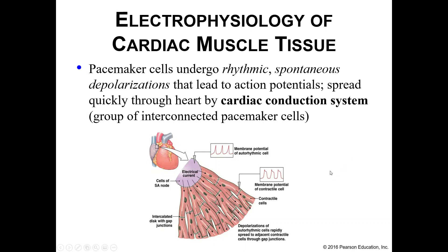Pacemaker cells perform rhythmic, spontaneous depolarizations that lead to action potentials. Those action potentials, once they start, quickly spread through the cardiac conduction system until they reach the contractile cells, giving us the rhythmic contractions we are familiar with — that good old lub-dub that has been with us our entire lives.